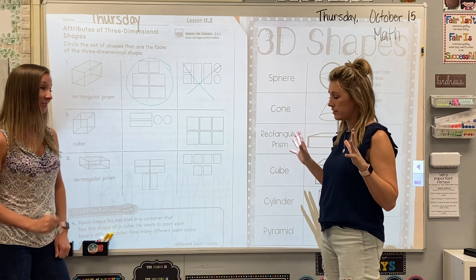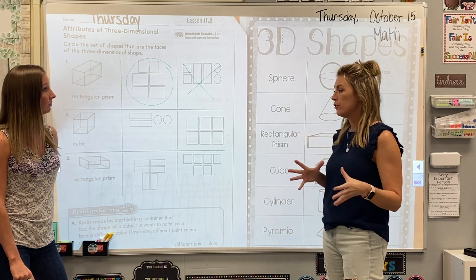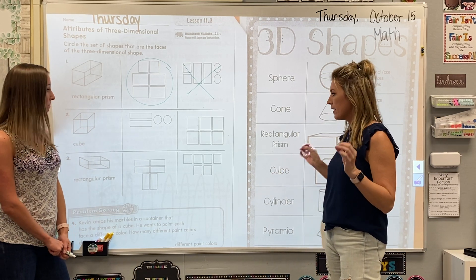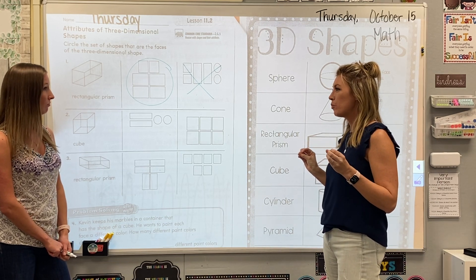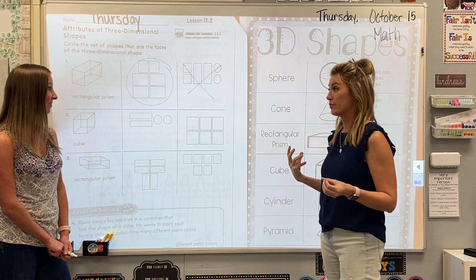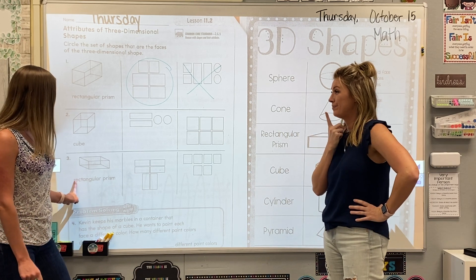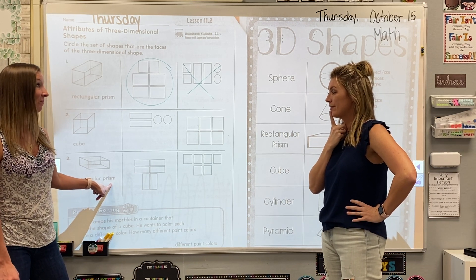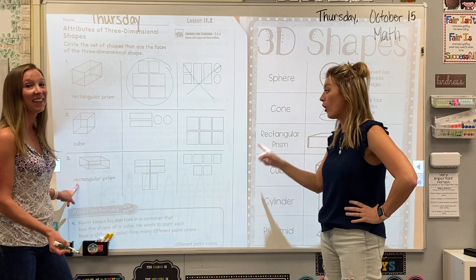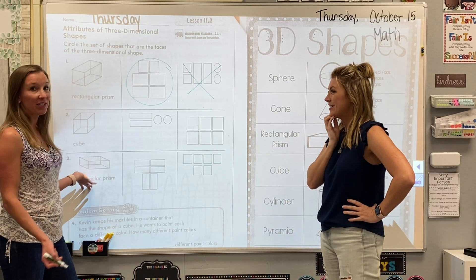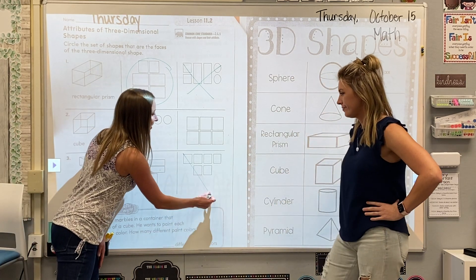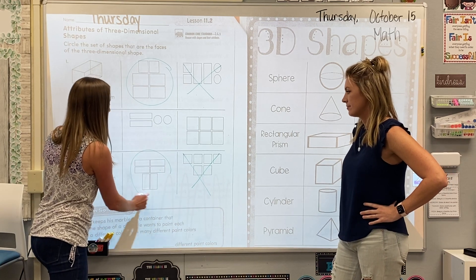Both a cube and a rectangular prism have six faces. But only one of them has all six faces that are squares, and the other one — some of the faces are rectangles. If this one is a rectangular prism, the word rectangle is in the name, so some of those sides should probably be rectangles, not squares. We have to have at least a couple of rectangles for it to be a rectangular prism, and there are no rectangles in this one at all — it's all squares. So let's put an X on the one that doesn't belong and circle the correct one.